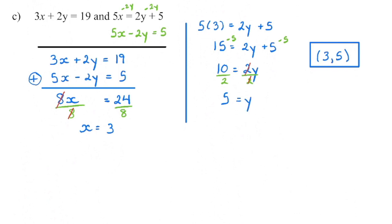Remember to write it as an ordered pair and then verify. If x is 3, this term has a value of 9; if y is 5, this term has a value of 10; 9 plus 10 is 19 — so that one is good, left equals right. And if x is 3, this term is equal to 15; if I put 5 in for y, I've got 10 plus 5: 15 equals 15. I know I have the right point.